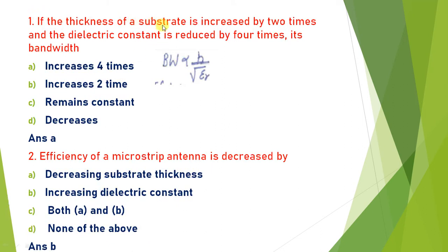If the thickness of the substrate is increased by two times and the dielectric constant is reduced by four times, will the bandwidth increase or decrease? This is the equation of bandwidth with respect to width and dielectric constant. Bandwidth is proportional to h (height/thickness) divided by the square root of epsilon_r, where epsilon_r is the dielectric constant.